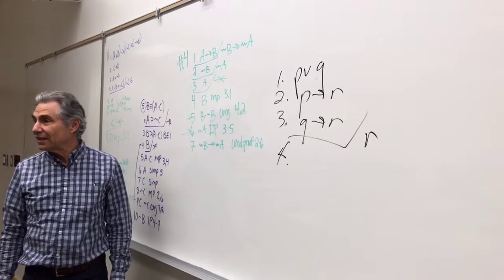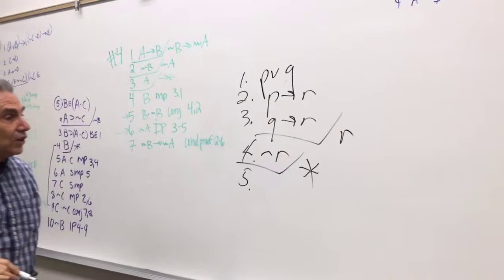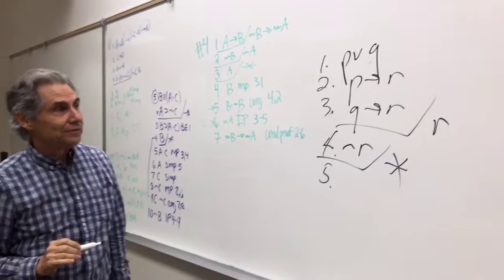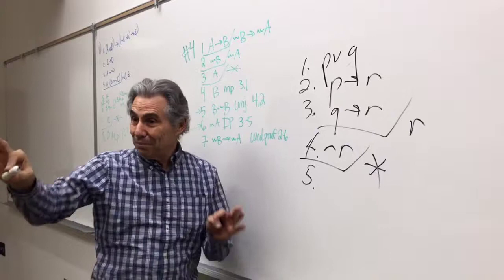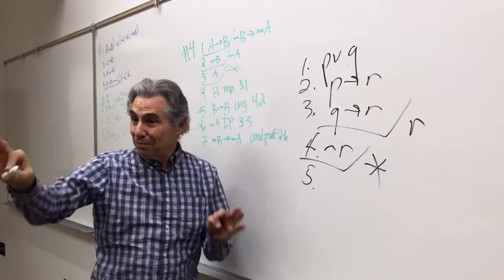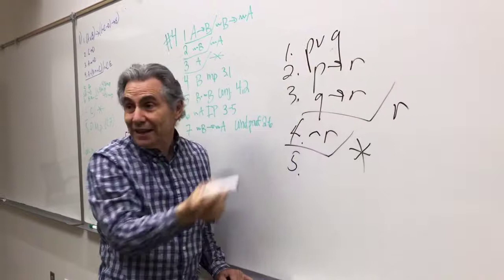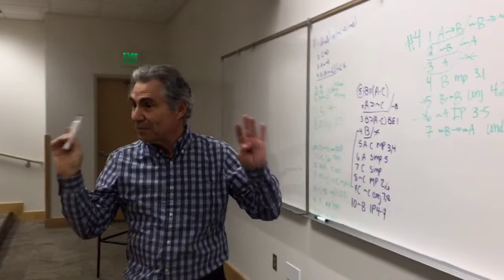Assume not-R and then show a contradiction. So how am I going to do that? From not-R and those two conditionals, I get not-P and not-Q. Assume P and get a contradiction — I get not-P. And when I get not-P it's going to give me Q, but then I'm going to get not-Q, so I'll have a contradiction. It's going to work. That's from last class — how to do that.